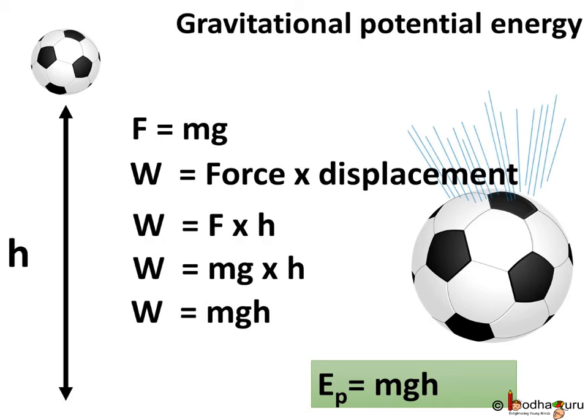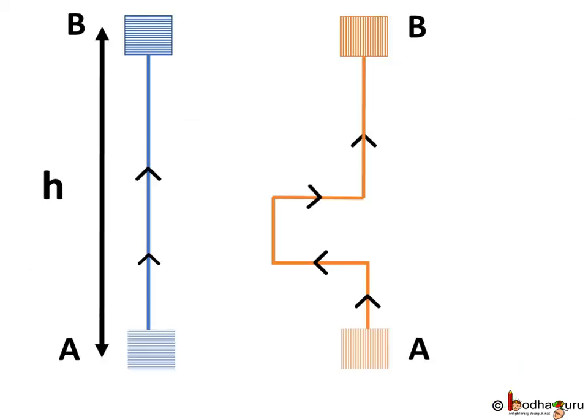In case of work done, the important thing to remember is, the work done by gravity depends on the difference in vertical heights of the initial and final position of the object. It does not depend on the path along which the object is moved.